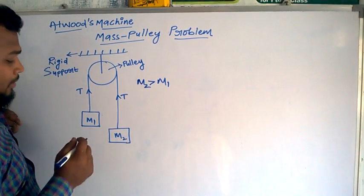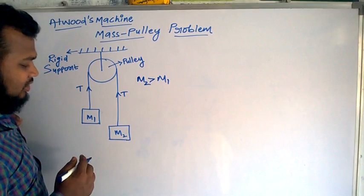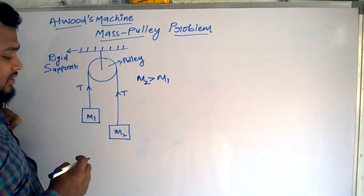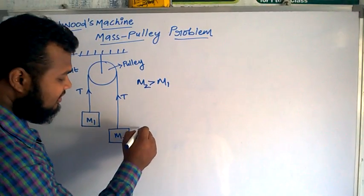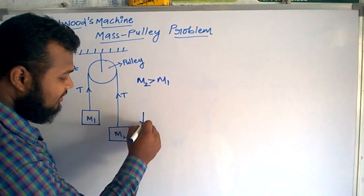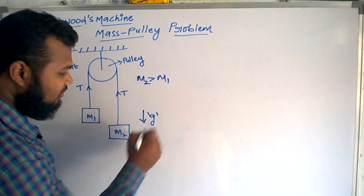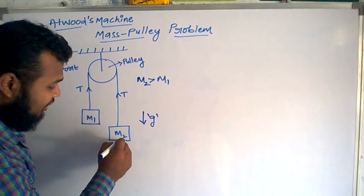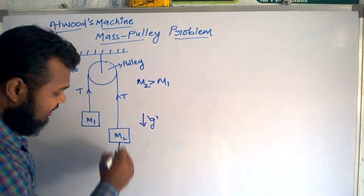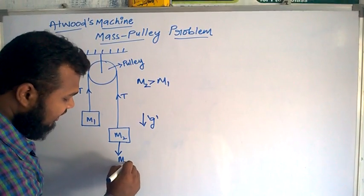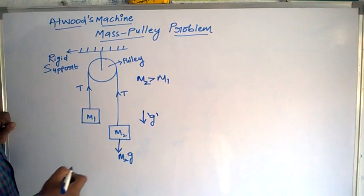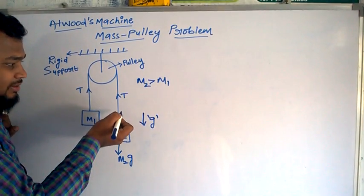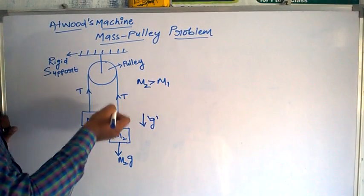When there are no other forces acting on this body, the gravitational force acts vertically downwards. The weight of this m2 is acting vertically downwards, and I can write it as m2g. m2g is acting vertically downwards, and tension in the string is simultaneously acting vertically upwards.